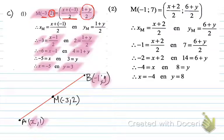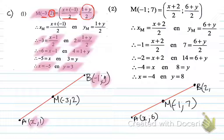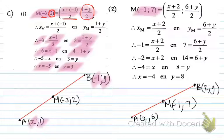Number 2: if M(-1, 7) is the midpoint of the line segment joining the points A(x, 6) and B(2, y), calculate the values of x and y. I substitute the midpoint (-1, 7) into the formula: (x + 2) / 2 for the x-coordinate and (6 + y) / 2 for the y-coordinate.